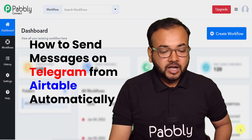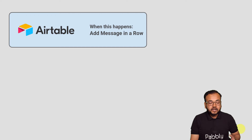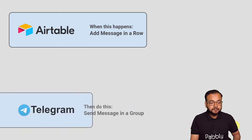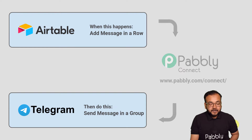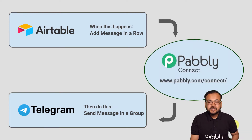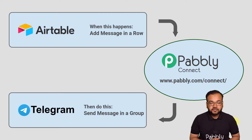Let me show you how this automation is going to work. The flow is: as and when you enter a message in a row in a table in Airtable, the same message will be delivered in a group that you have in Telegram automatically. To make this happen we are using Pabbly Connect, which is an integration and automation tool. The best part is you will not require any coding skills or programming knowledge.